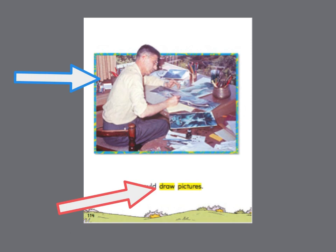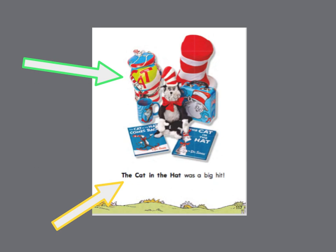Let's try this page. What is the green arrow pointing to? You got it again — it's pointing to a photograph of real things. How about the yellow arrow? It's pointing to bold print. Bold print makes those words stand out on the page. When you're reading this week, I want you to pay attention to your text and graphic features — they will give you more information when you read. You've done a great job today, boys and girls. I'll see you next time!